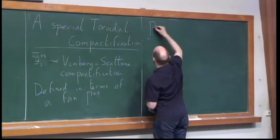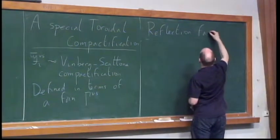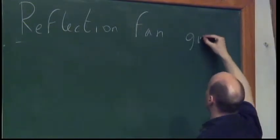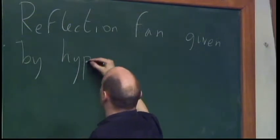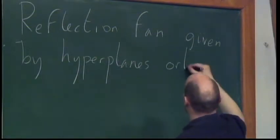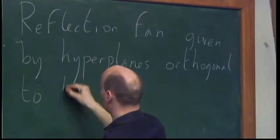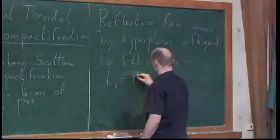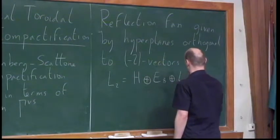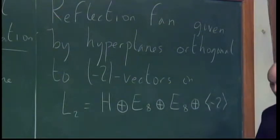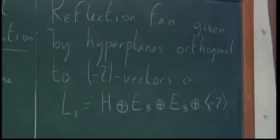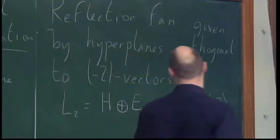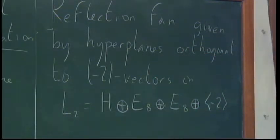We want this fan to arise canonically from the K3 surfaces — not just some arbitrary choice. Since it should correspond to the Hacking compactification, we use the reflection fan given by hyperplanes orthogonal to minus-two vectors in the lattice L2, which is H ⊕ E8 ⊕ E8 ⊕ (-2). This lattice appears naturally when constructing the period domain for K3 surfaces of degree two.